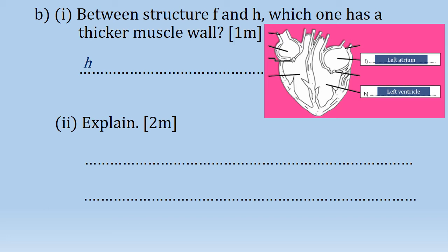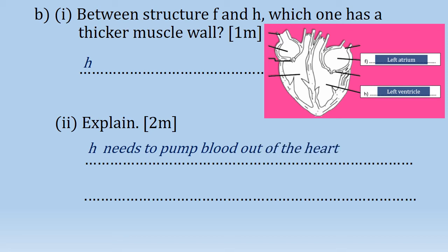For question B2, we have to give an explanation about the answer in B1 above — two marks. We should relate the structure and their functions for both left ventricle and left atrium. H, or the left ventricle, needs to pump blood out of the heart at high pressure. Meanwhile, F, the left atrium, only receives blood from the body parts.